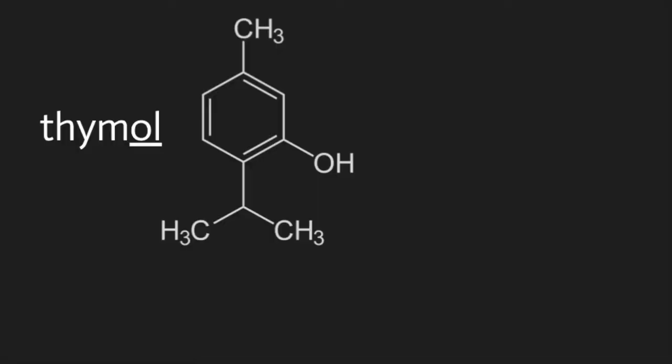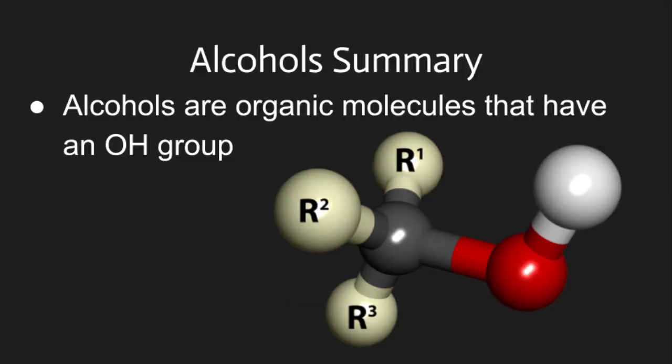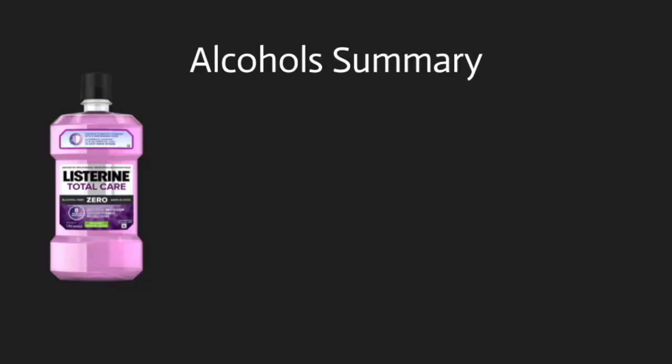And funny story — I was brushing my teeth the other day and I noticed on my mouthwash that it's labeled as alcohol-free. But then I looked at the list of ingredients and I saw thymol, menthol, and propylene glycol, all of which end in -OL, and all of which contain the hydroxyl group. So yes, this company has an alcohol-free mouthwash with alcohols in it. And so those are alcohols: organic molecules with the OH or hydroxyl group present in them. You can often identify alcohols by their name because they end in -OL, and they're used in everything from mouthwash to membranes to margaritas. I hope you enjoyed this video. We'll see you next time on Science with Thomas!